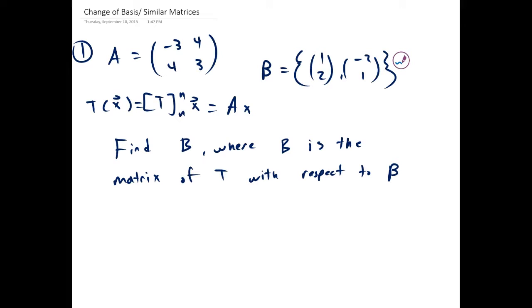We're given a basis beta: [1, 2] and [-2, 1]. And we're told to find B, where B is the matrix of T with respect to beta.